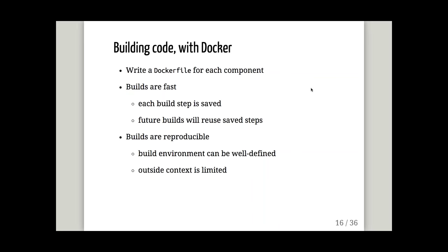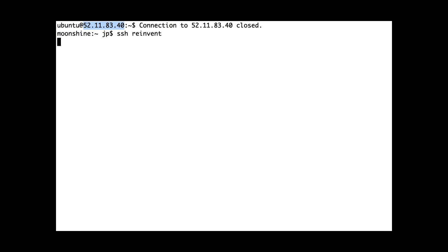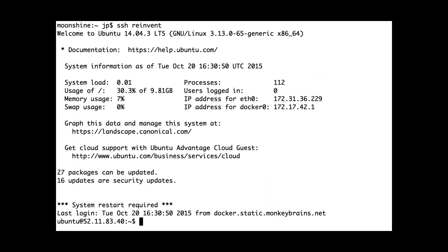Builds will also be fast thanks to a caching system — similar to make files for C code, which only rebuild changed source files. When you change the recipe for a container, the steps that haven't changed will not be executed again. I'll show a demo. I'm connected here on a remote EC2 instance, and I'll get a little sample application to show how we build containers. All the code I'm using here is publicly available on GitHub, so you can repeat these experiments easily.